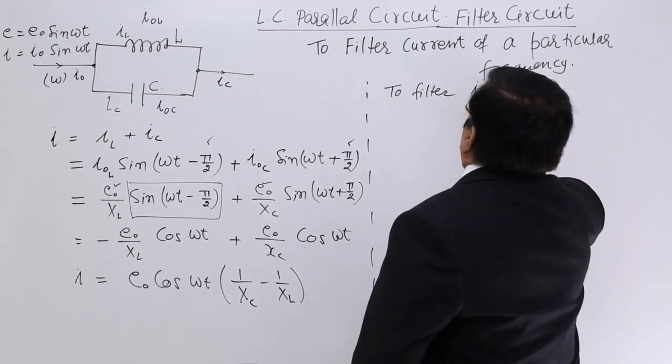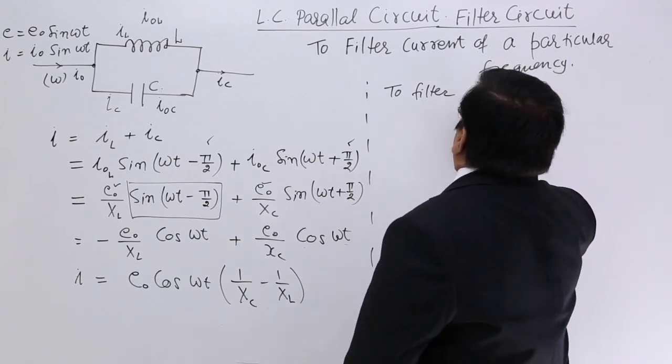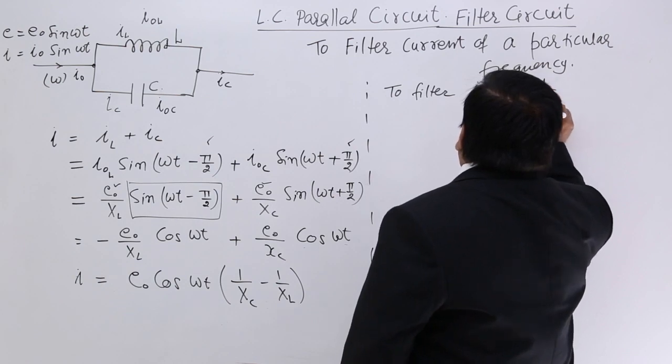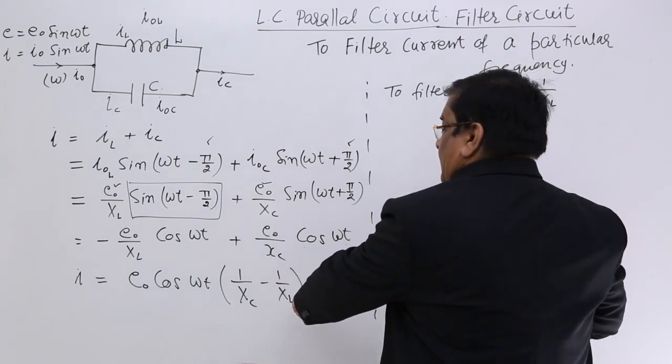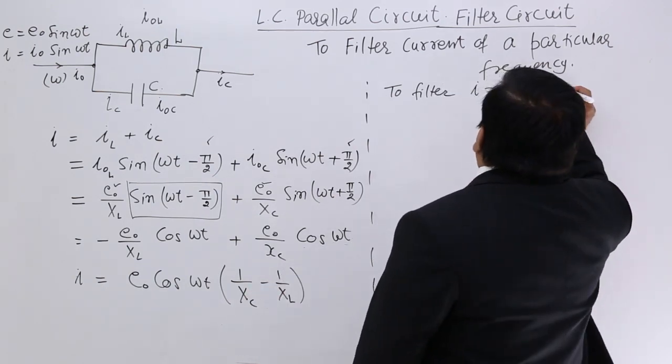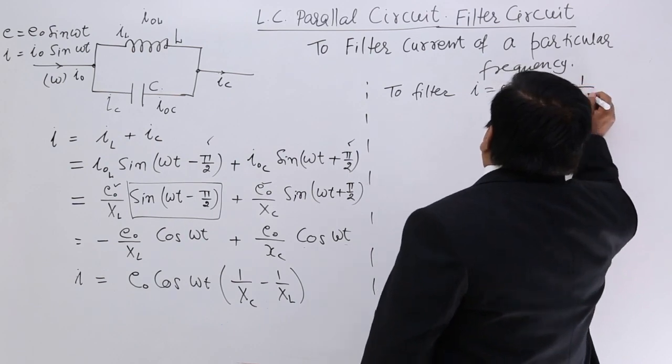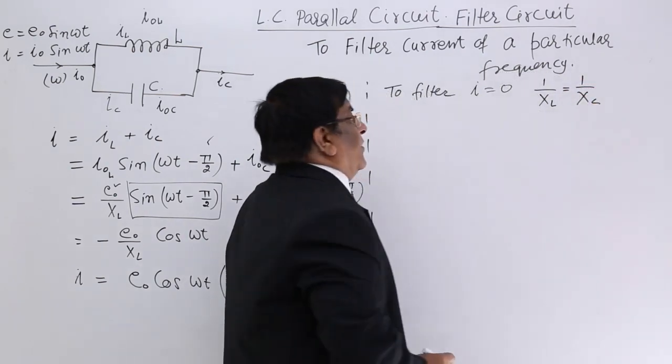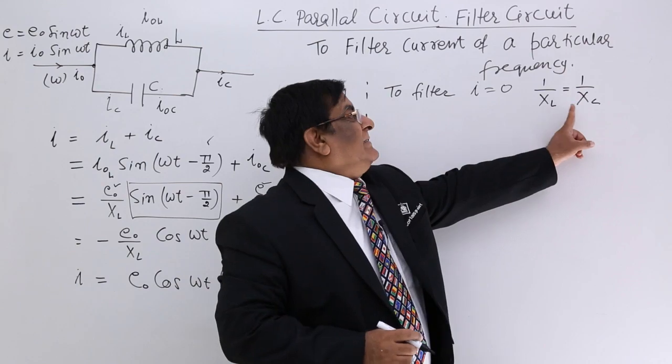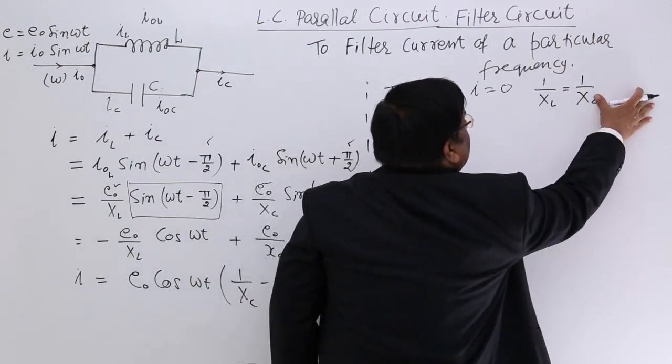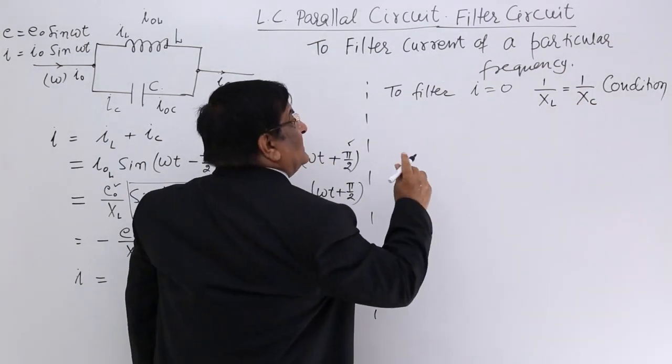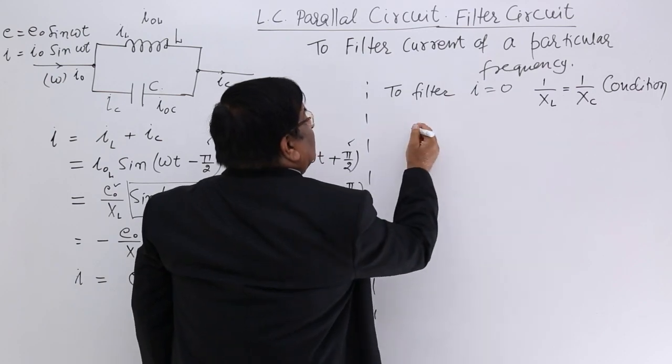So to filter, I is equal to zero, 1 upon XL and 1 upon XC, they should be equal to each other. If this is the condition, we can expand this condition.